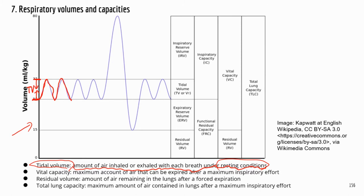You will always have a little bit of air in the lungs that you can't get out. Otherwise your lungs would be completely collapsed with no air. So no matter how hard you exhale, you will always have a little bit of air left in the lungs, and that amount is called residual volume.